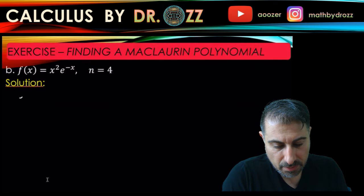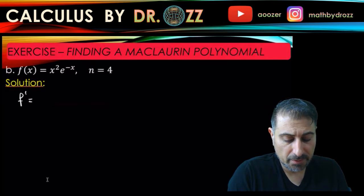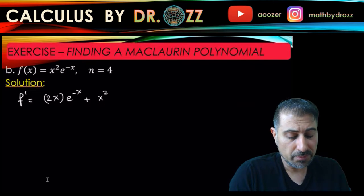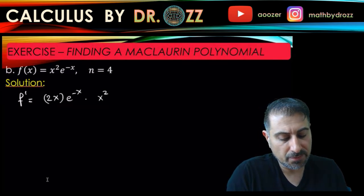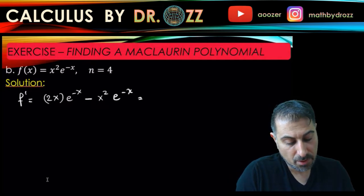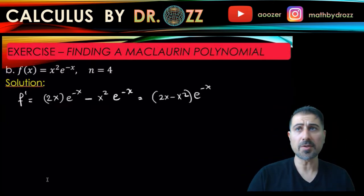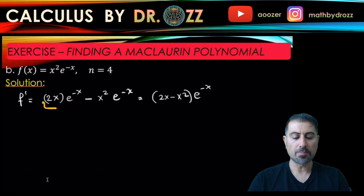Let's start writing f prime by applying the product rule. The derivative of x squared is 2x times e to the minus x, plus x squared times the derivative of e to the minus x — that's the chain rule, which brings a minus sign. Factoring out e to the minus x, we get e to the minus x times (2x minus x squared). Writing it this way simplifies the next step, since we'll only need one product rule for f double prime.